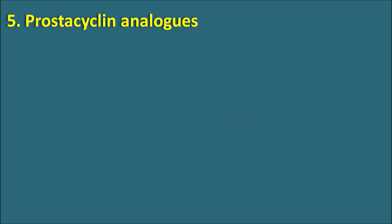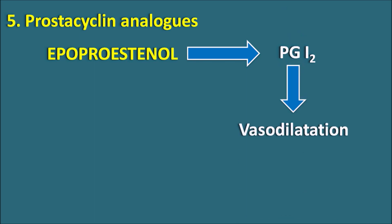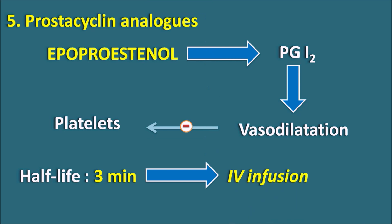The fifth category is prostacycline analogues. One drug is epoprostenol, which is a prostaglandin I2 analog also known as prostacycline. This PGI2 acts on IP receptors — the receptors for prostaglandin I2 — thereby increasing vasodilation. When acting on IP receptors, it increases cyclic AMP levels producing vasodilation. As blood vessels are dilated, platelets are not attached to the site of injury, so vasodilation inhibits platelet activation and aggregation. Epoprostenol has a half-life of around 3 minutes, which is why this drug is given as an IV infusion.